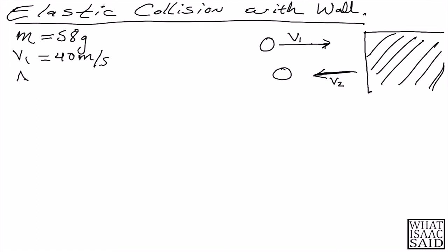Let's say that the time that it took for this event to happen is 15 milliseconds. And we said that V1 is equal to V2.